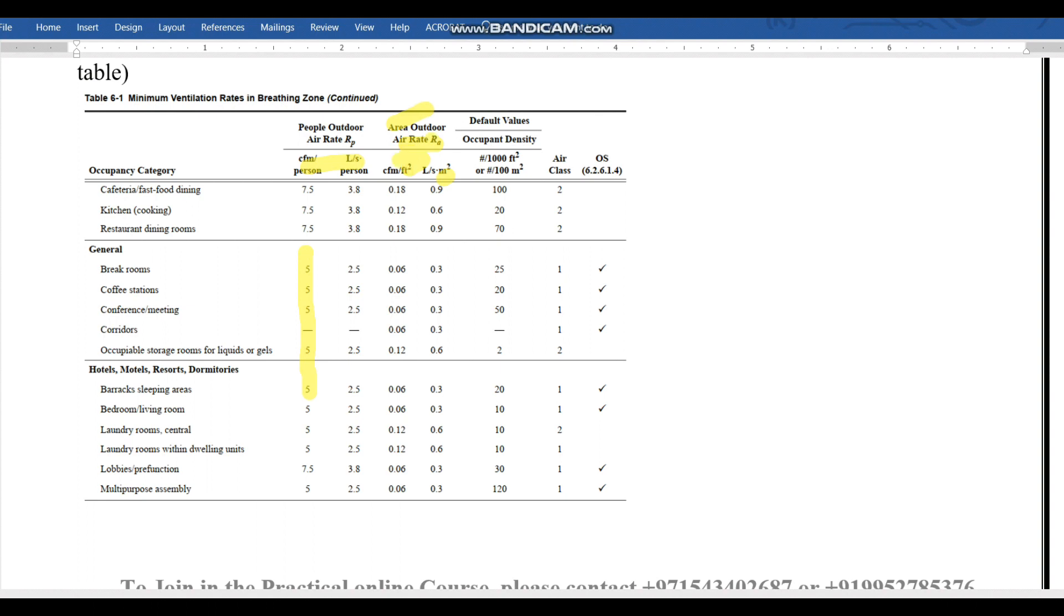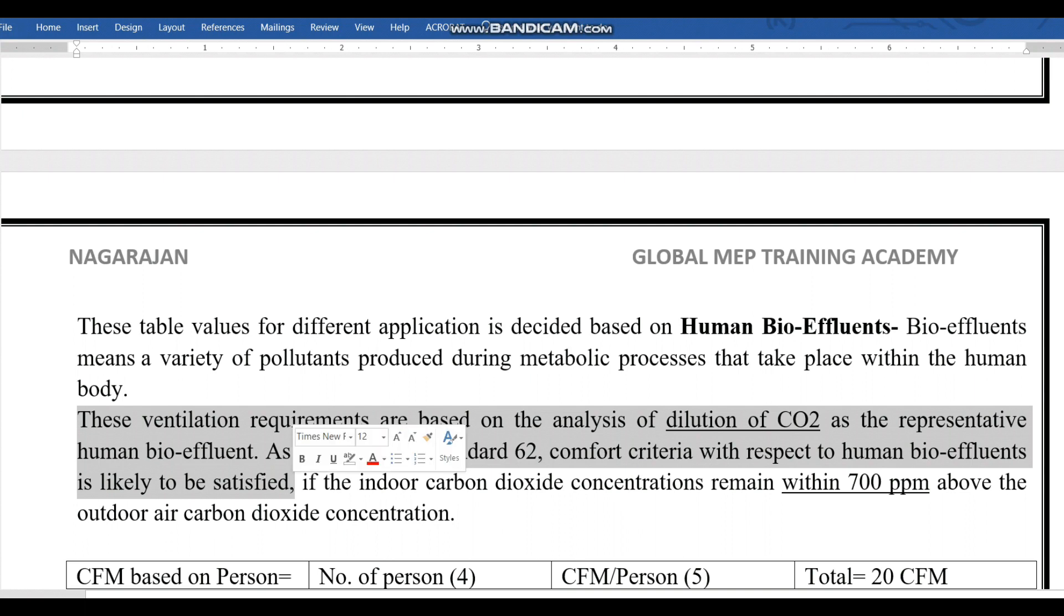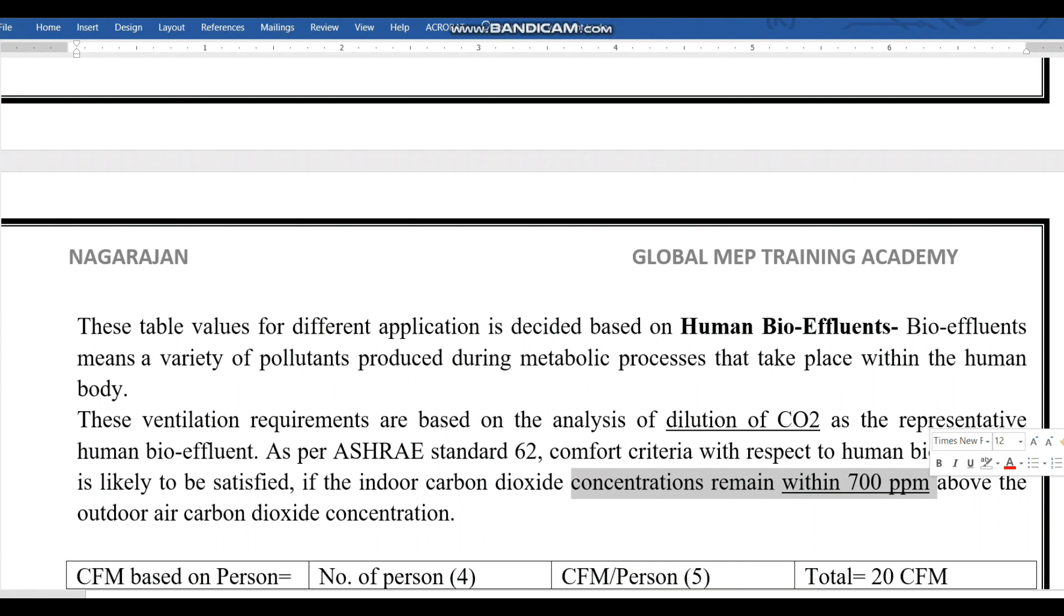This table is based on human bio-effluents, meaning a variety of pollutants produced during the metabolic process in the human body. We need to control CO2 to a particular limit. These ventilation requirements are based on analysis of dilution of CO2 as the representative human bio-effluent. As per ASHRAE Standard 62, comfort criteria with respect to human bio-effluents is likely to be satisfied if indoor carbon dioxide concentration remains within 700 ppm.